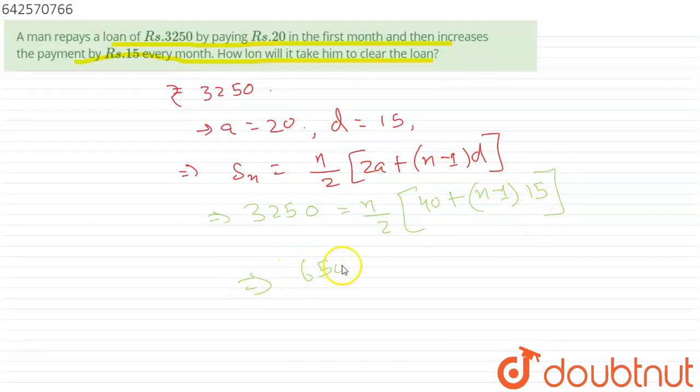Further it will become 6500. This 2 will go on the numerator on the LHS, and it will become n multiplied by 40 minus 15, that will be equal to 25, plus 15n. And then we will take 5 common from here.